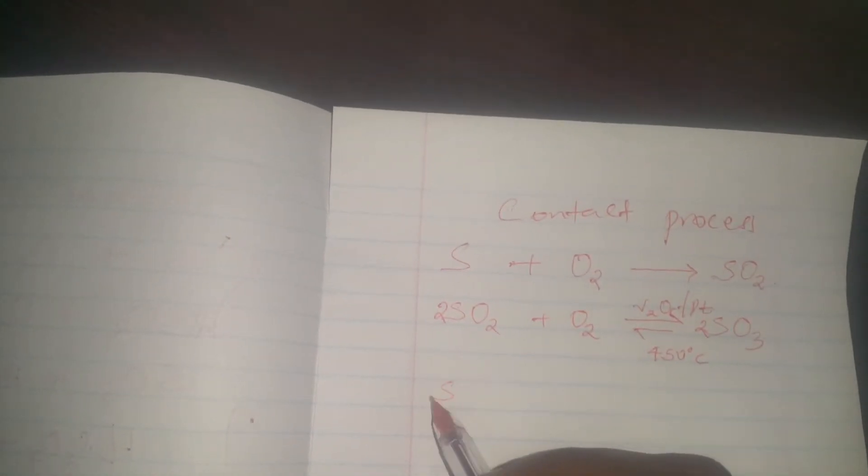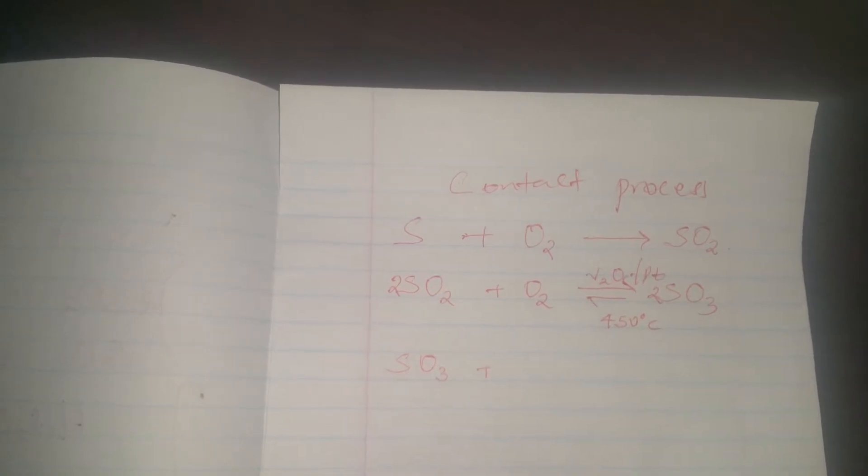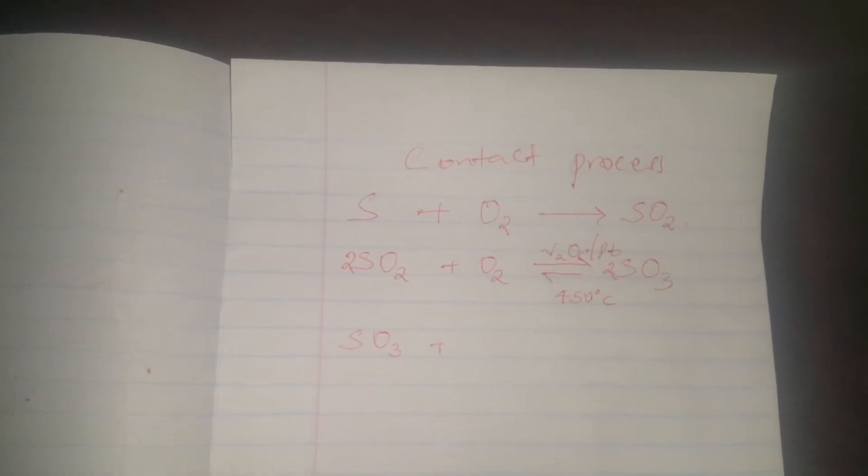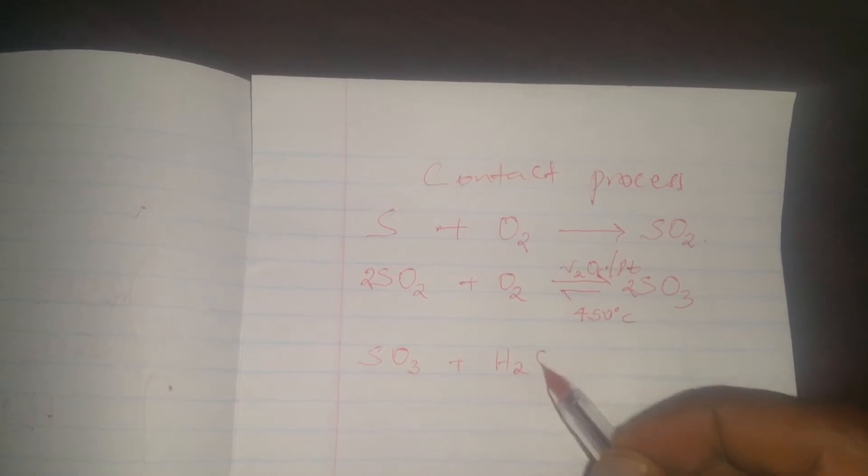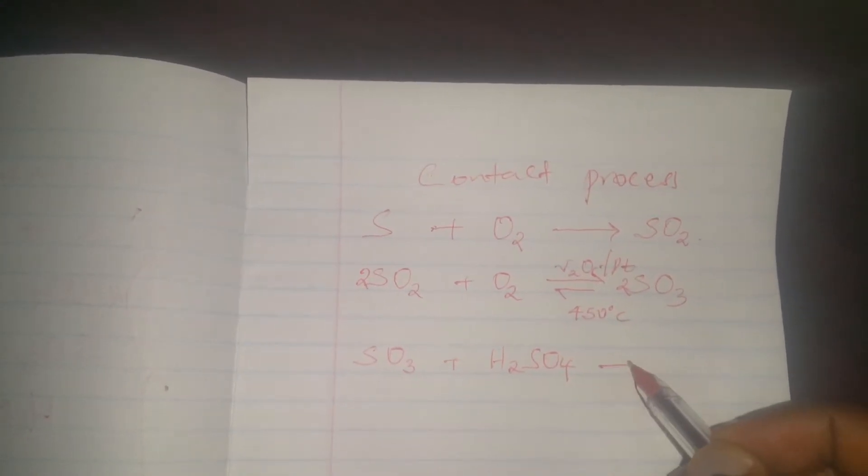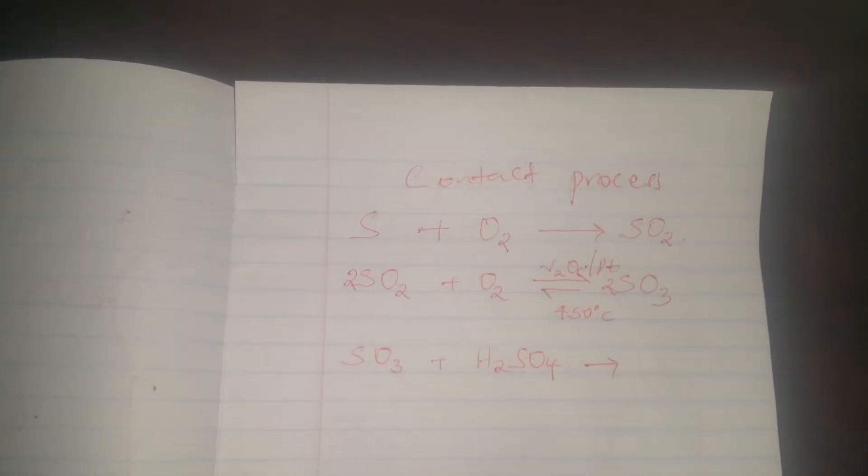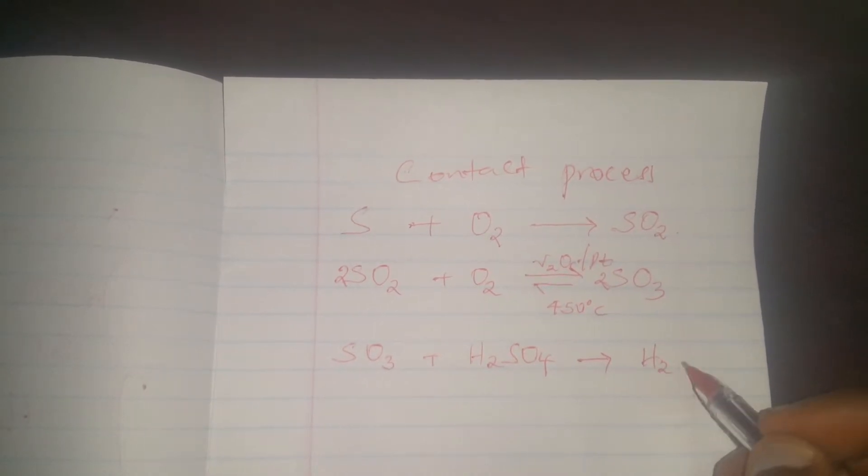The sulfur trioxide is then taken to the absorption chamber to which we add concentrated sulfuric acid to form fuming sulfuric acid, trivially called oleum.